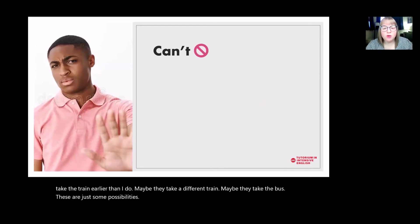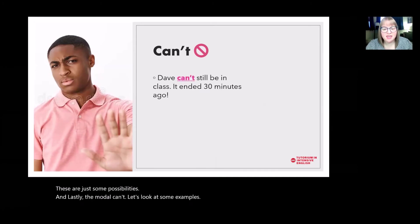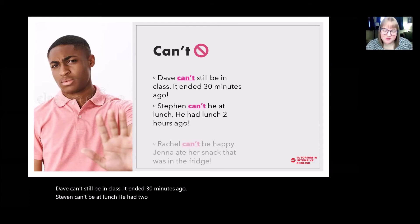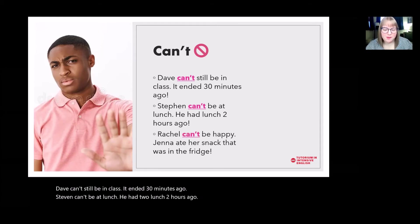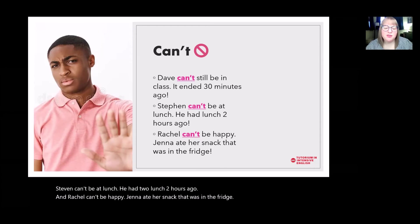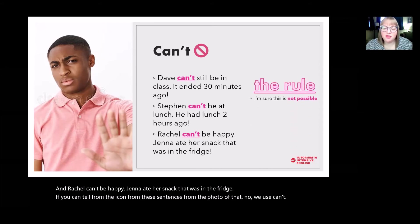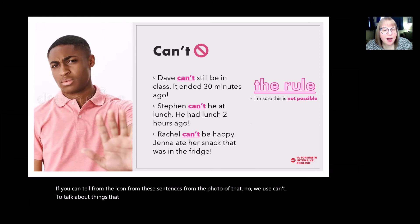And lastly, the modal 'can't.' Let's look at some examples. Dave can't still be in class — it ended 30 minutes ago. Stephen can't be at lunch — he had lunch two hours ago. And Rachel can't be happy — Jenna ate her snack that was in the fridge. We use 'can't' to talk about things that are probably not possible. I'm pretty sure this is not possible.